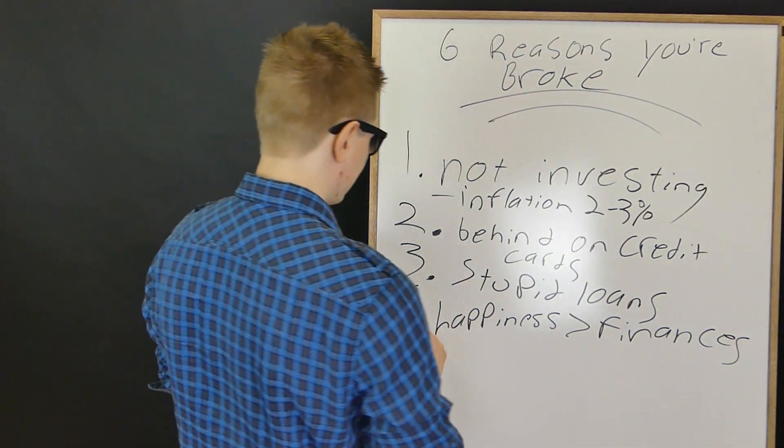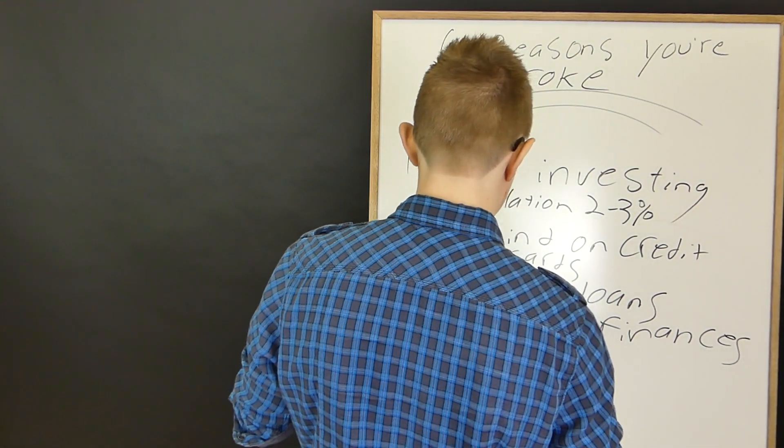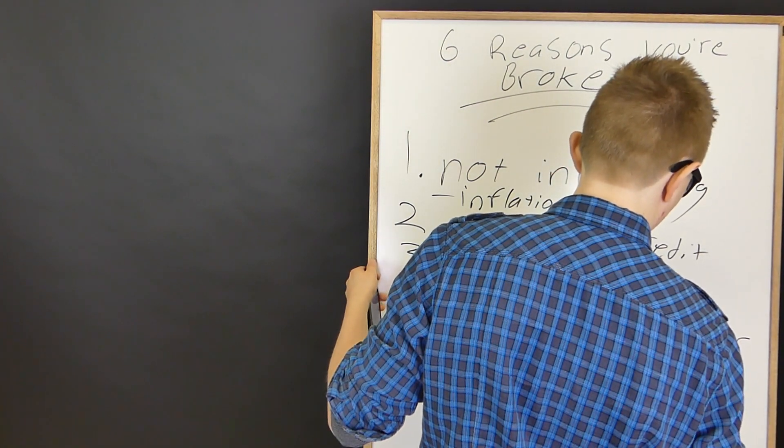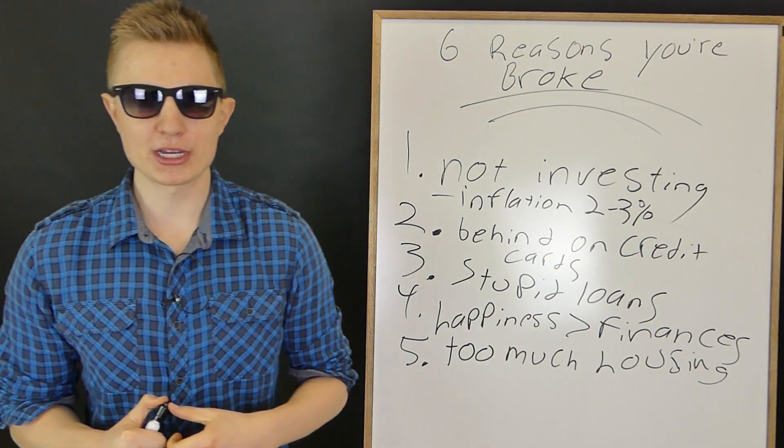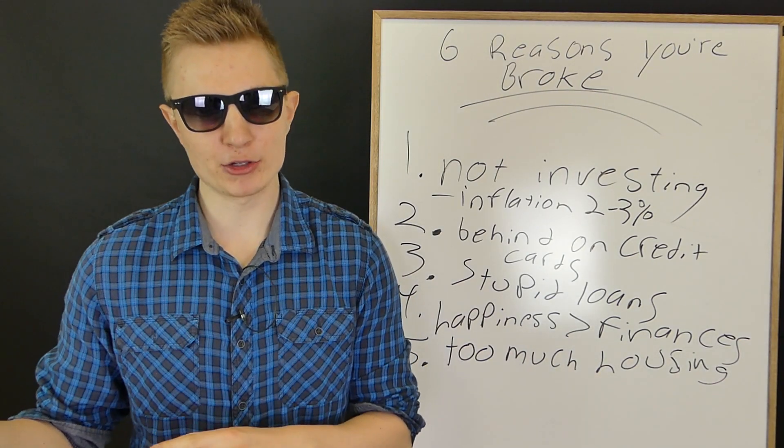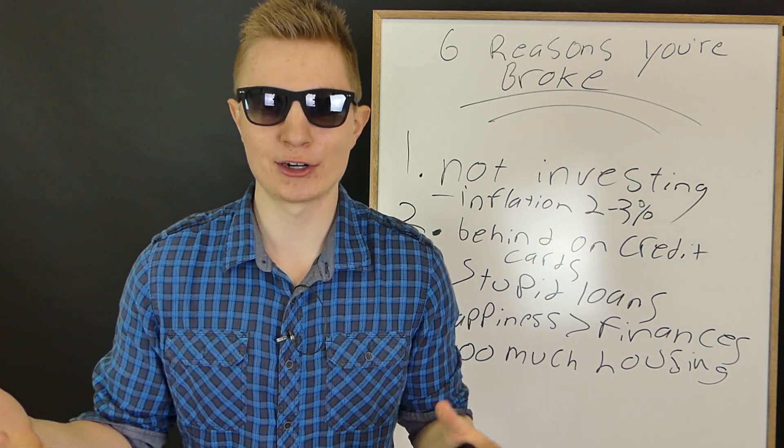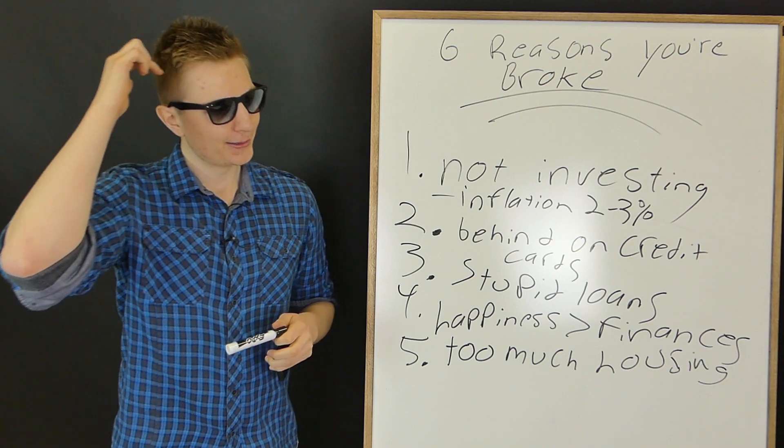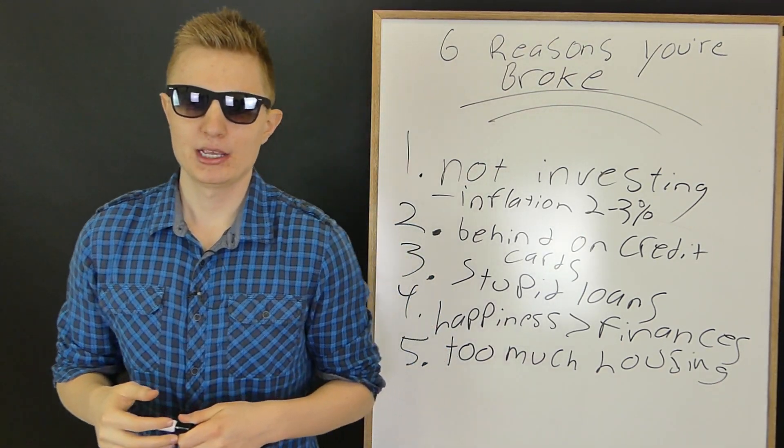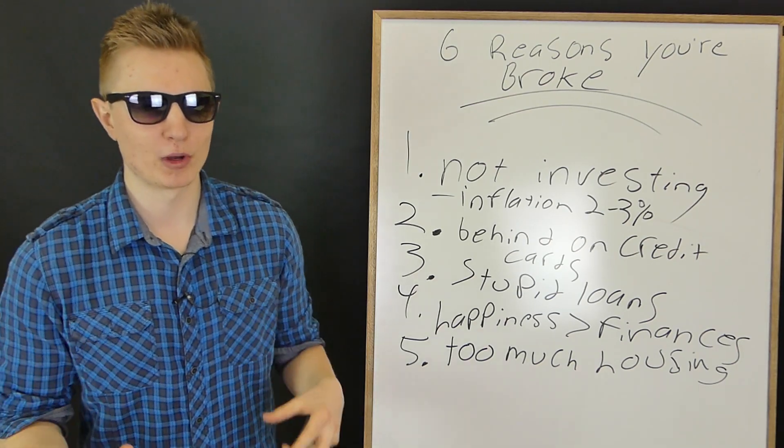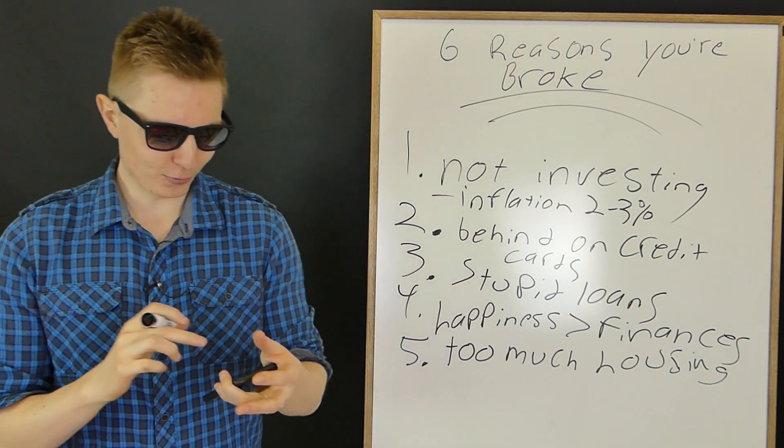Now, number five, this is one that really can kill people that can make people go bankrupt. And that is too much housing. This is a big one. I love real estate, but people over leverage themselves. For those of you that don't know, 34% of your take home income, that is the maximum amount you should be spending on housing if you want to be financially comfortable. I know Dave Ramsey says 25%, but 34% is generally what banks look at. So if you're taking home three grand a month, then your housing costs should only be a thousand dollars maximum. People think that if you make three grand a month, you can do $1,500 in housing for rent. That's half of your income. Don't do that. That's stupid. You're going to go broke.